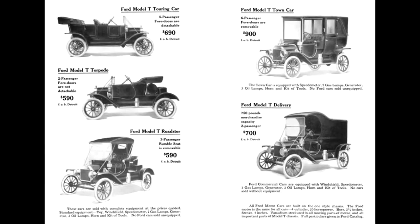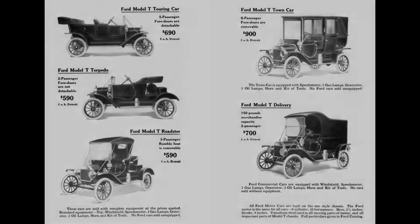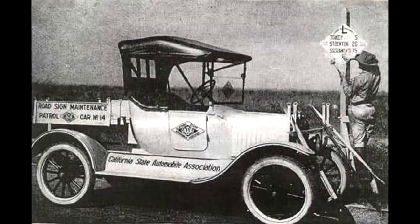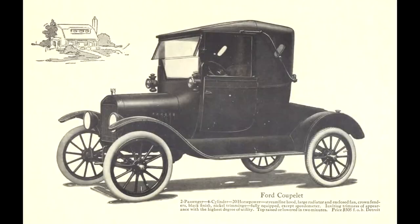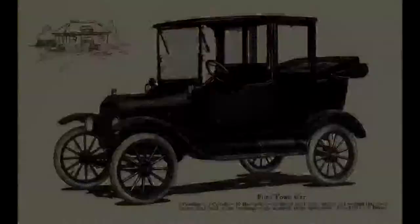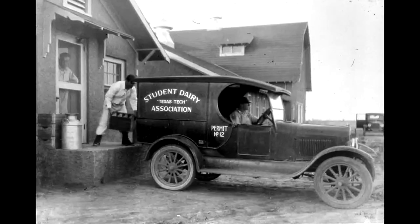There was no single Model T. The car came in a variety of body styles to meet a range of uses. From the first year of production to the final car off the assembly line, the Model T offered many choices for owners. The main body styles were Touring Car, Roadster, Roadster Pickup, Coupe, Town Car, and Sedan.